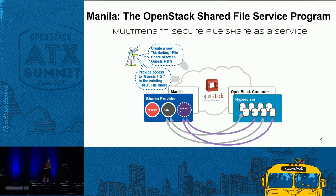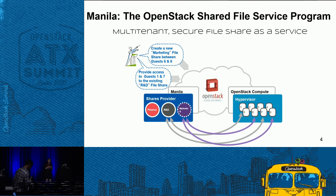Manila is OpenStack's shared file service program. It supports multi-tenancy and provides secure file share as a service. For example, you could have a 5GB NFS share and share it between different tenants securely — different departments like sales and marketing can share the same file share by specifying a network range for access control. Manila for file share is similar to what Cinder is for block storage, except Manila has an additional networking component that adds more complexity on the back end.